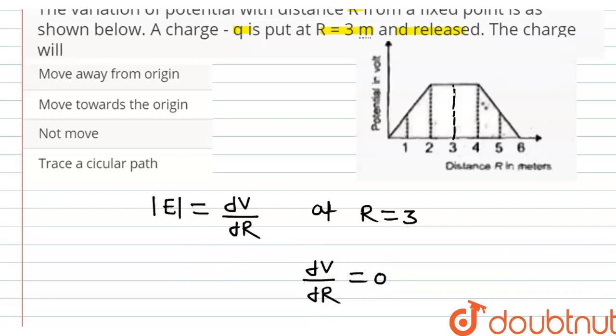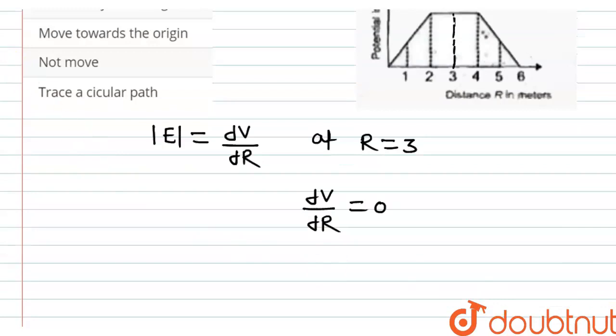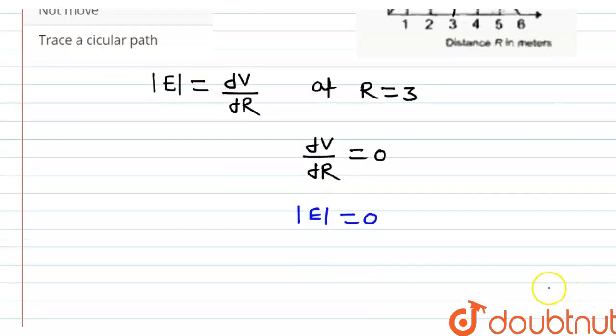As dV by dr is equal to 0, we can say that the value of electric field, that is mod of E, is also equal to 0. And as the value of electric field is equal to 0,